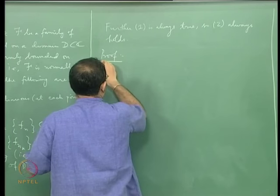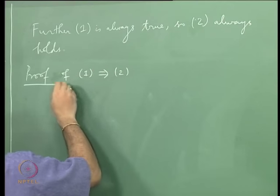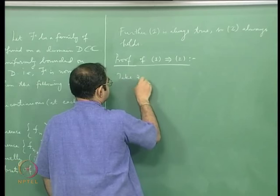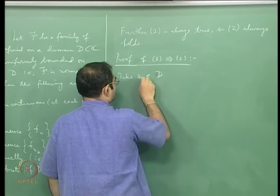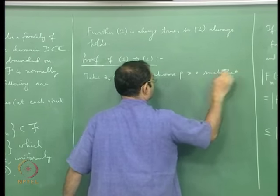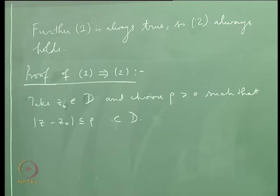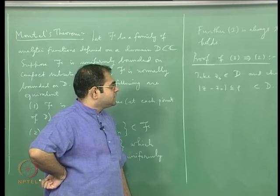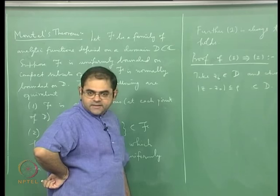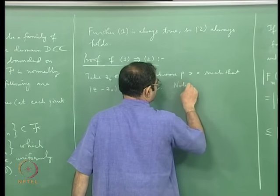Let us look at the proof. I will give the proof of 1 implies 2. Take a point z₀ in the domain and choose ρ greater than 0 such that the disc |z − z₀| ≤ ρ is contained in the domain. You can certainly do this since the domain is an open set and z₀ is an interior point — there is a disc surrounding z₀ contained in the domain. Take a slightly smaller disc whose closure is also contained in the domain and call that radius ρ.